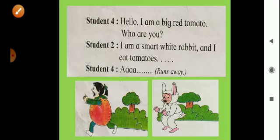Now Student 4 said, 'Hello, I am a big red tomato. Who are you?' Student 2 again said, 'I am a smart white rabbit, and I eat tomatoes.' Now the tomato also feared, like the cabbage and carrot. Student 4, the tomato, said 'Ah' and ran away.